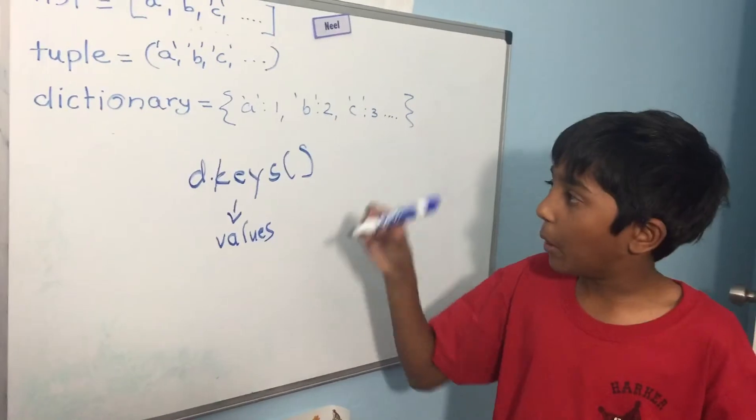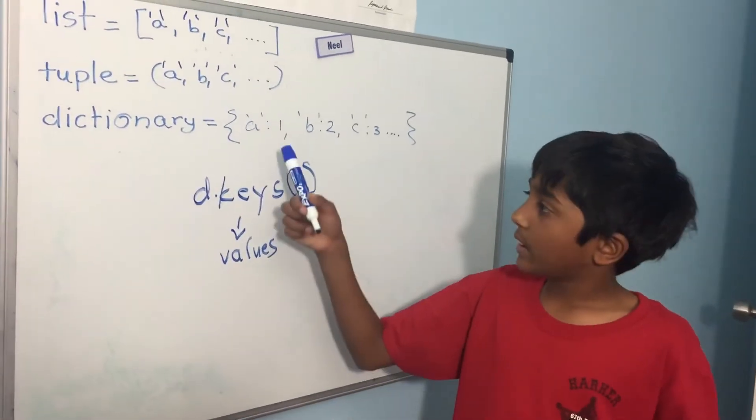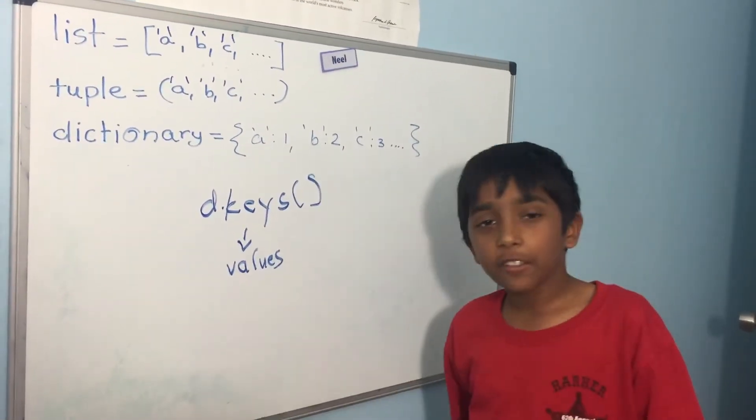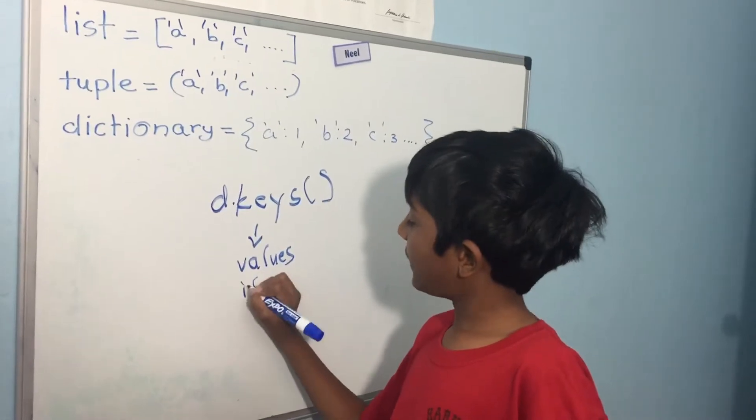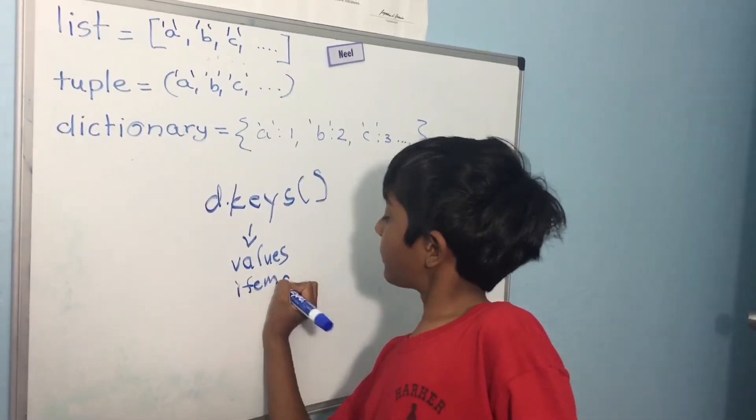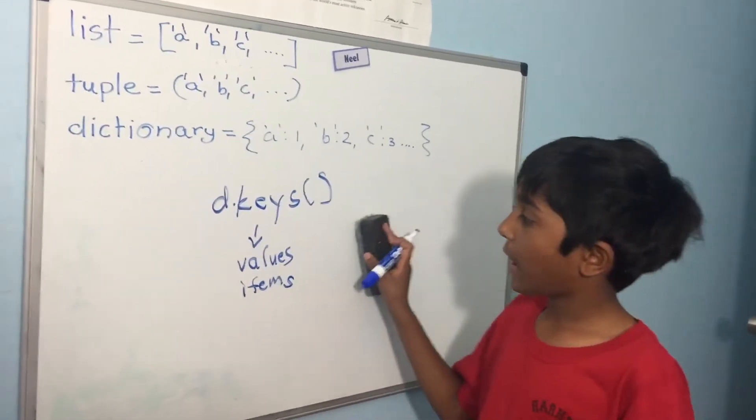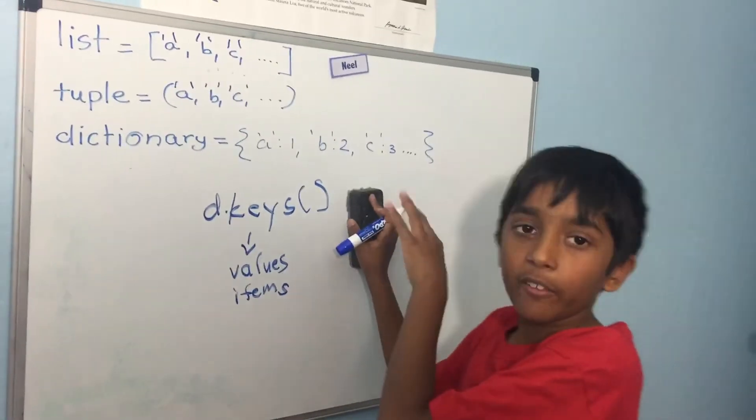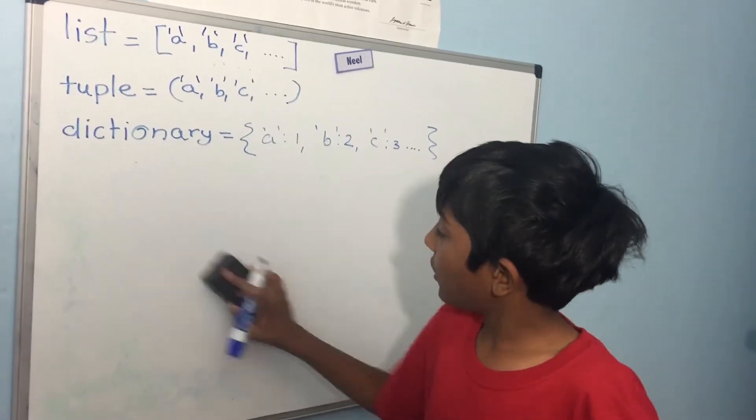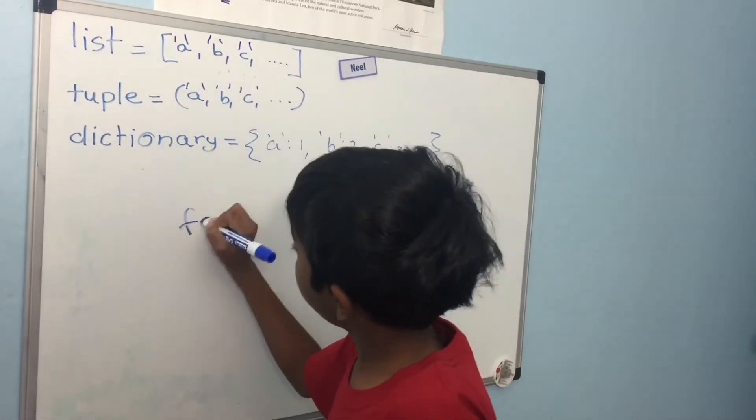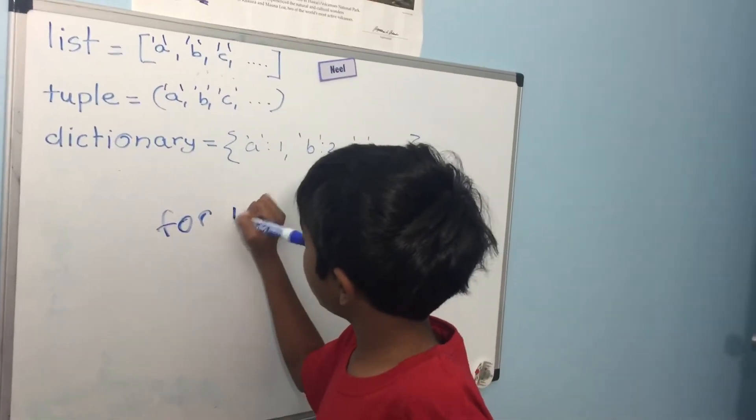If you want both the keys and the values you write items and then after you have that list all you have to do is put that in a for loop to iterate it.